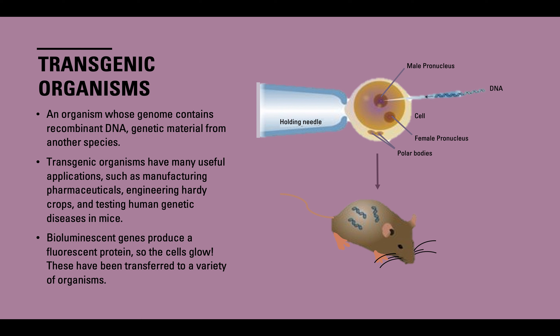A transgenic organism is an organism whose genome contains recombinant DNA, and recombinant DNA is genetic material from another species. Recombinant means reorganizing — we're reorganizing DNA from another species into the species we're working with. Transgenic organisms have many useful applications, like manufacturing pharmaceuticals, engineering hardy crops for our food supply, and testing human genetic diseases in mice. Also, bioluminescent genes that glow in the dark produce a fluorescent protein so that the cells will glow.